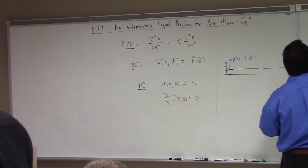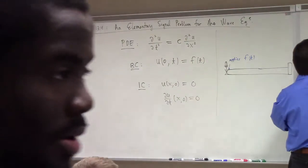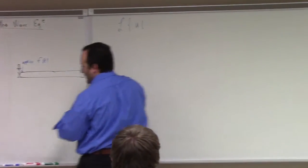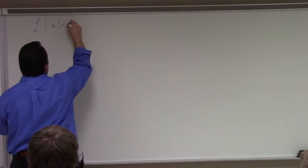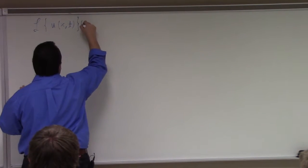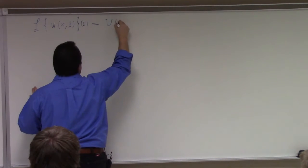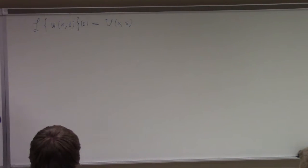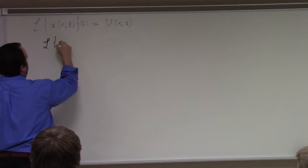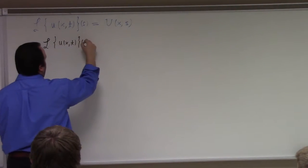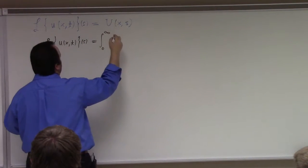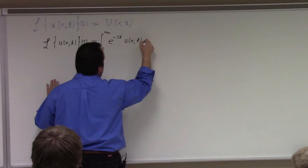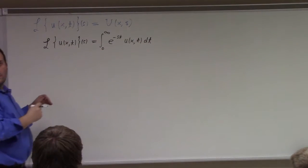We'll use the Laplace transform of U of x, t, denoted by big U of x, S. To calculate that, we'll do like we usually do: the Laplace transform of U of x, t of S will be the integral from 0 to infinity of e to the minus S t, U of x, t, dt.